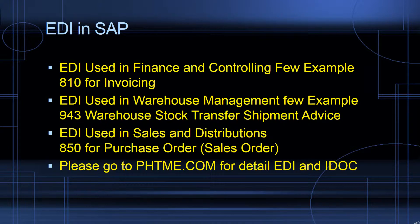EDI in SAP — there are different EDI types used across various industries and processing areas. In finance, 810 is used for invoicing. For warehouse stock transfer and shipment advice, 943 is used, and 850 is used for sales order processing. These are just a few examples of the different types of EDIs processed in SAP.